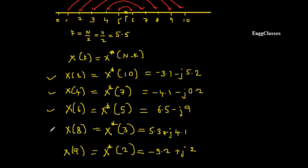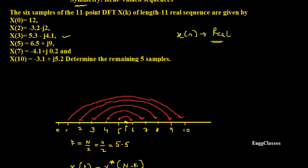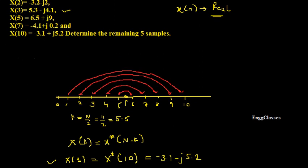This is how we find the remaining 5 samples of an 11-point DFT. Always remember: whether it is an 8-point, 10-point, or 15-point DFT, when half the points are given, use the symmetry property. Draw a straight line, find the folding index, and the point to its left and immediate right are complex conjugates of each other. This is a very handy property for finding remaining DFT samples. If there are any doubts, please let me know in the comment section. Don't forget to subscribe to NG Classes for more videos on digital signal processing.